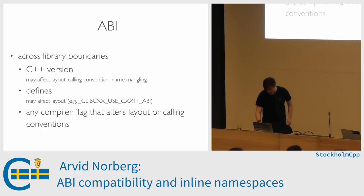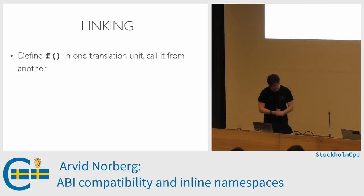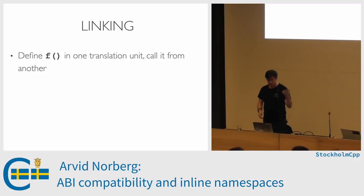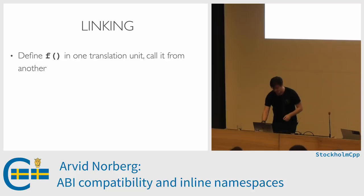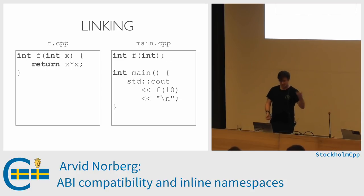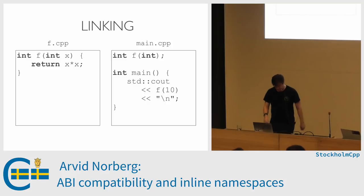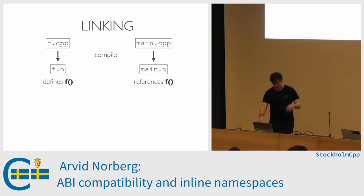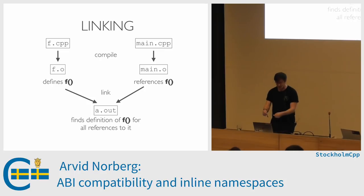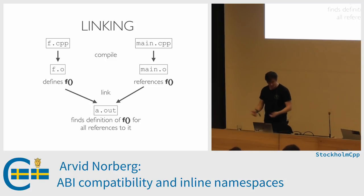Let's briefly review how linking happens. We have a function f. We define it in one translation unit and we call it from another. A translation unit is a fancy word for a .cpp file. So we have f.cpp where we define f, and main.cpp that forward-declares f and then calls it. When we compile this, they are turned into object files — one defines f, one references f. The linker figures out which one is f and connects the dots, so that when we call the function, we actually end up calling the one defined in the other object file.